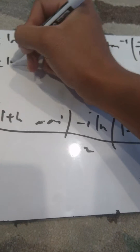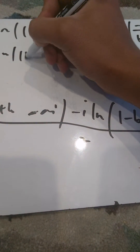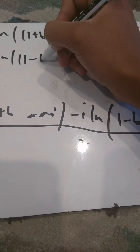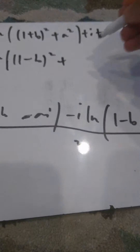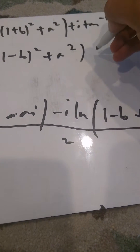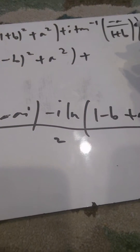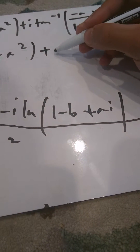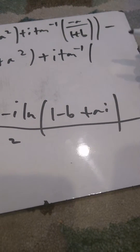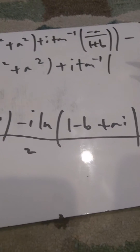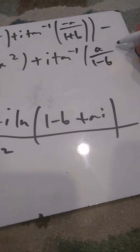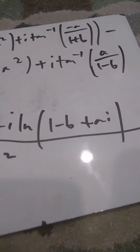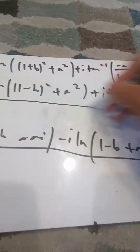Minus i times one half ln of (1 minus b) squared plus a squared, and then we have plus i times the arctangent of a over (1 minus b). And this all over 2.